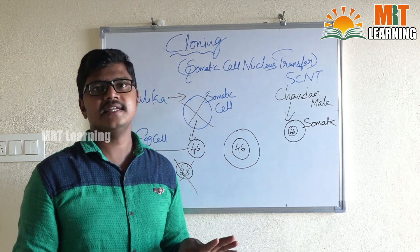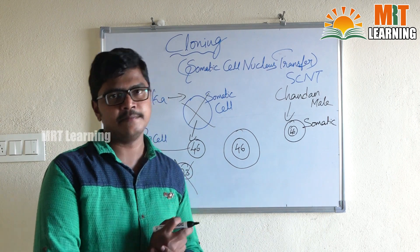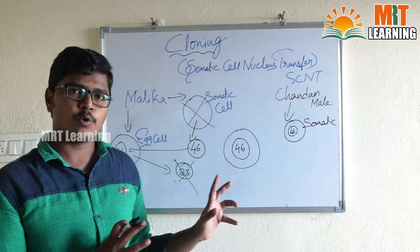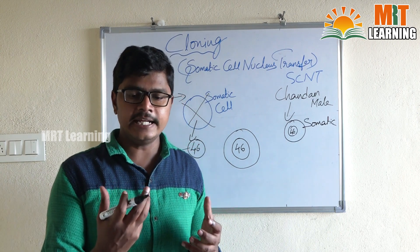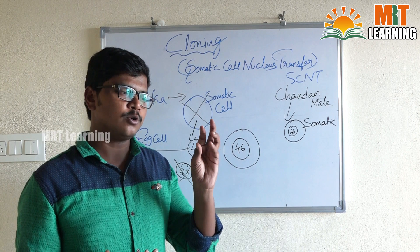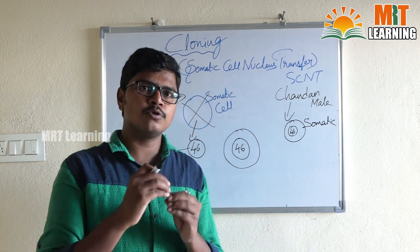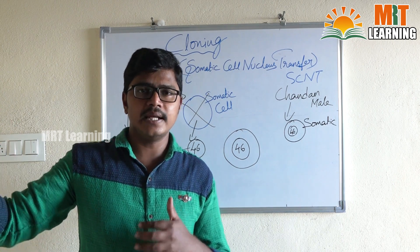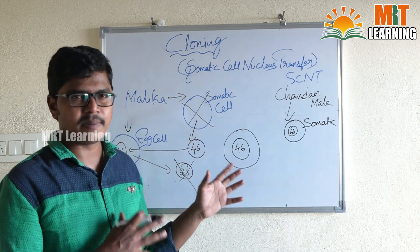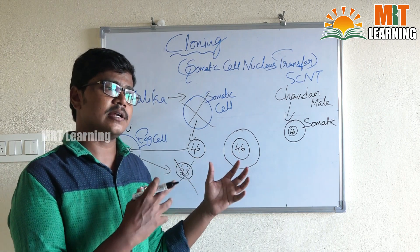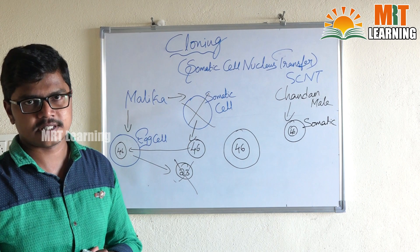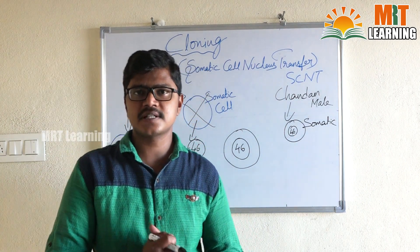The cloning process is totally illegal throughout the world for humans, but we can do cloning in animals. The same process applies to animals. Cloning is very useful to protect animals that are endangered and going extinct. For example, Bengal tigers are going extinct — we can collect the somatic cell of a Bengal tiger and include it into a female tiger's egg, so the Bengal tiger breed will increase. Cloning is useful to protect animals from extinction. Surrogacy is a different concept, as is IVF. Thanks a lot for watching. Please like, share, and subscribe if you liked this video.